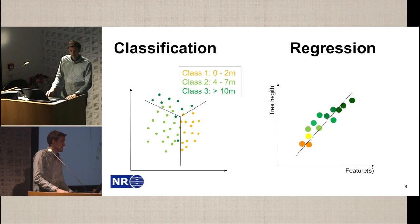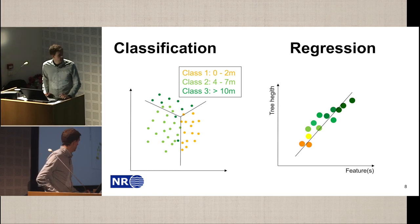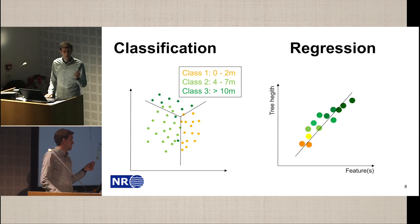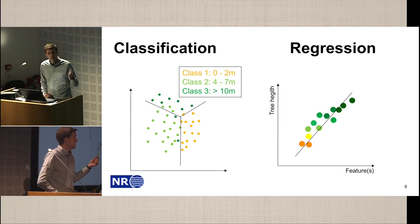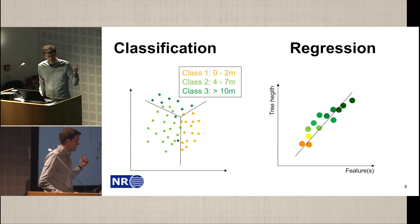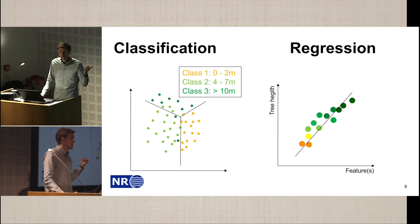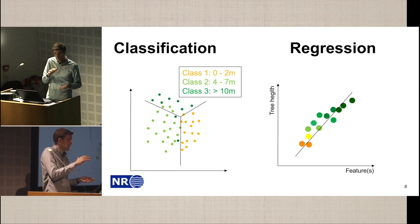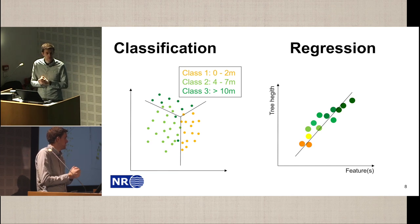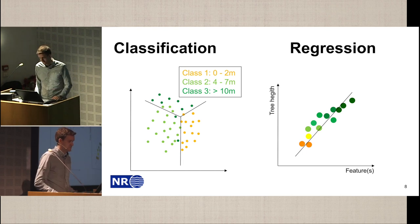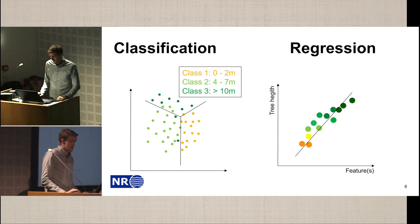We had two choices. We could frame this as a regression problem, describing tree height as a number — the actual height of the tree — and that's what we did. But for illustration, I'll also look at classification. I grouped the tree heights into three classes: no trees or below two meters, four to seven meters as mid-range, and above ten meters as tall trees. We'll start with the classification problem.